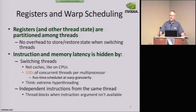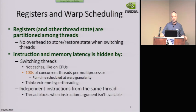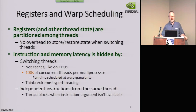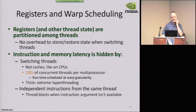Registers and warp scheduling: there's a lot of state associated with each thread and block, including registers, local shared memory, local memory, and data in the L1 cache. There's no overhead to store and restore state when switching threads — it's totally free. How is that possible? Because we don't store and restore. It's all resident.